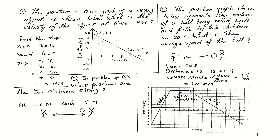If I take any two points on this straight line, it gives me the slope. The first point has coordinates x1 equals 0 and y1 equals 20. The second point has x2 equals 4 and y2 equals 0.